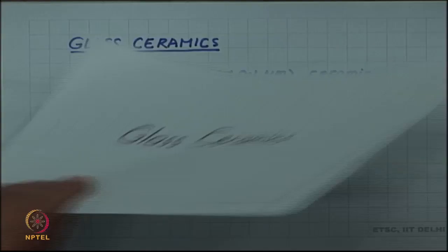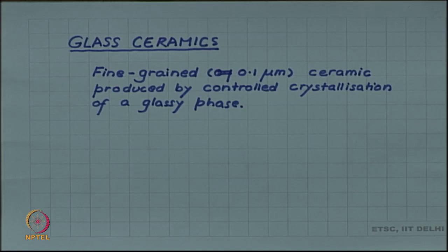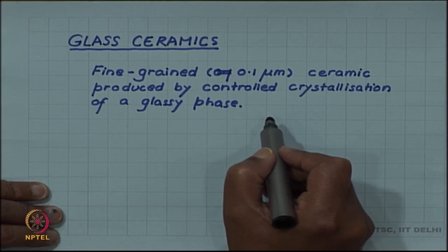Glass ceramic is an important class of ceramic material which we will now look at. Glass ceramics are actually ceramic materials which are very fine grained, 0.1 micrometer in diameter is the grain size, and they are produced by controlled crystallization of a glassy phase. That is why the name glass ceramic.